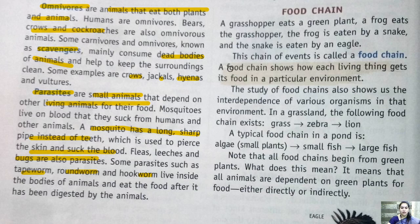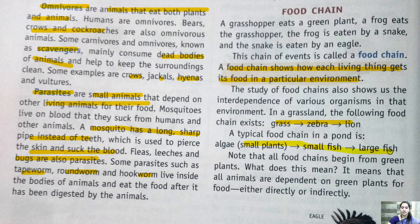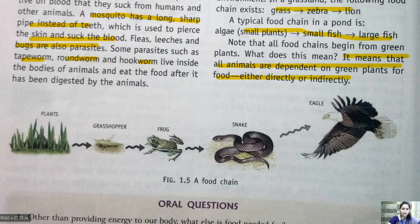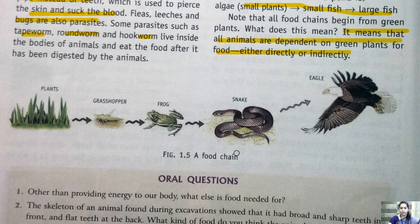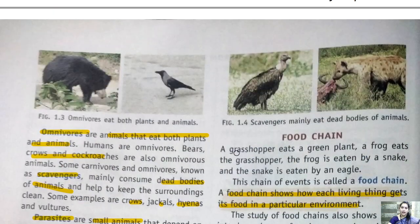A food chain shows how each living thing gets its food in a particular environment. Each organism depends on others for food — it is a chain of eating and being eaten. For example: grass is eaten by zebras, and zebras are eaten by lions. A plant food chain example: plant → grasshopper → frog → snake → eagle. All animals are dependent on green plants for food either directly or indirectly.